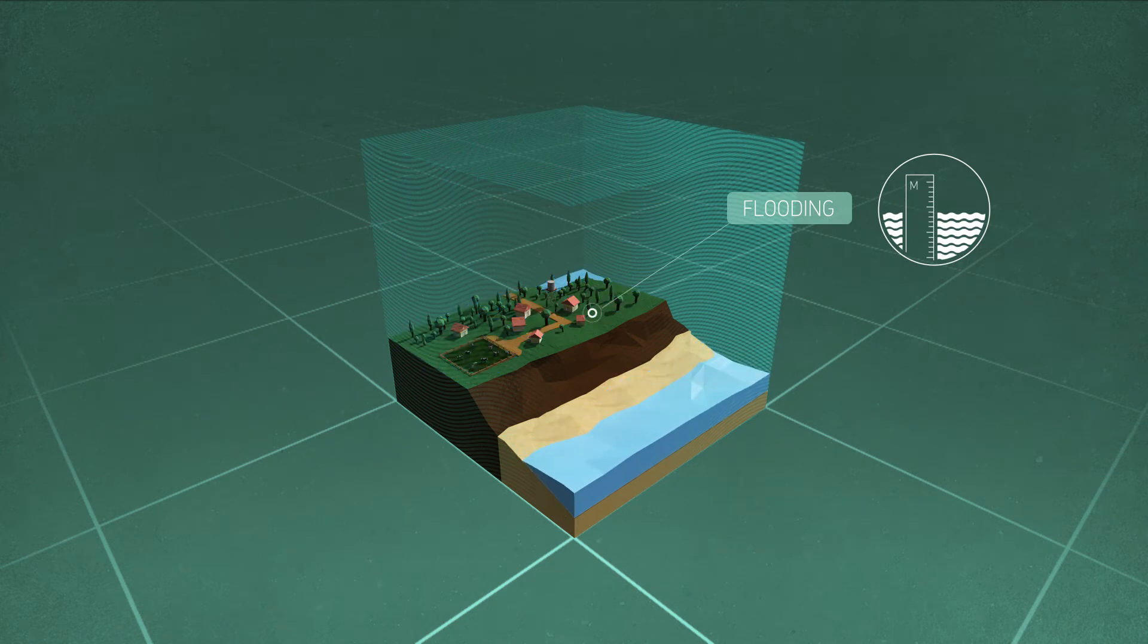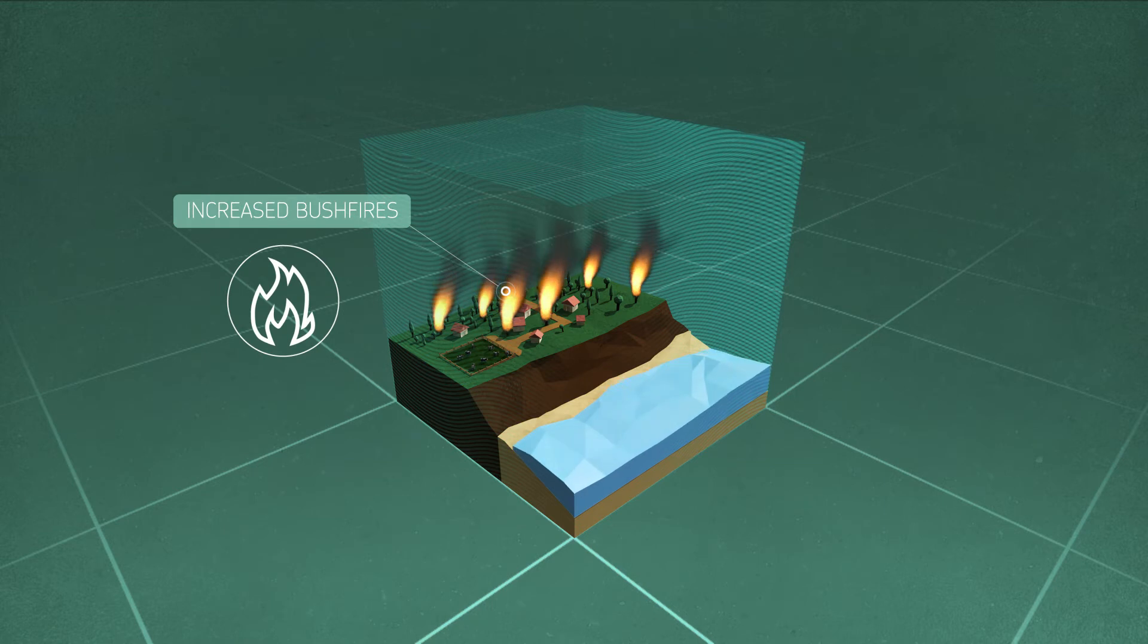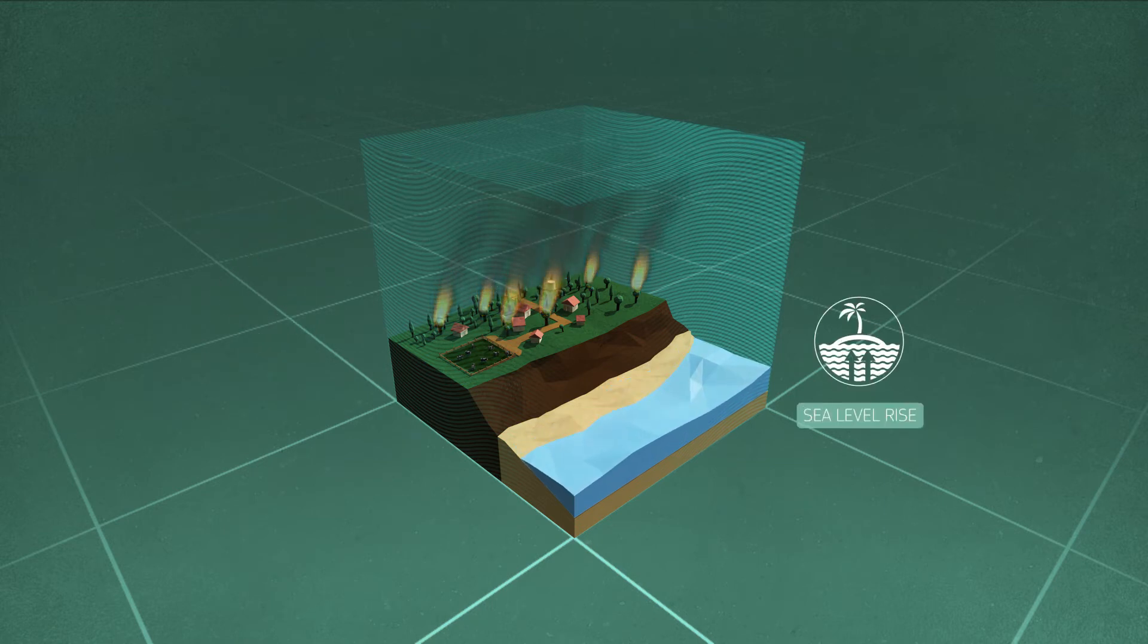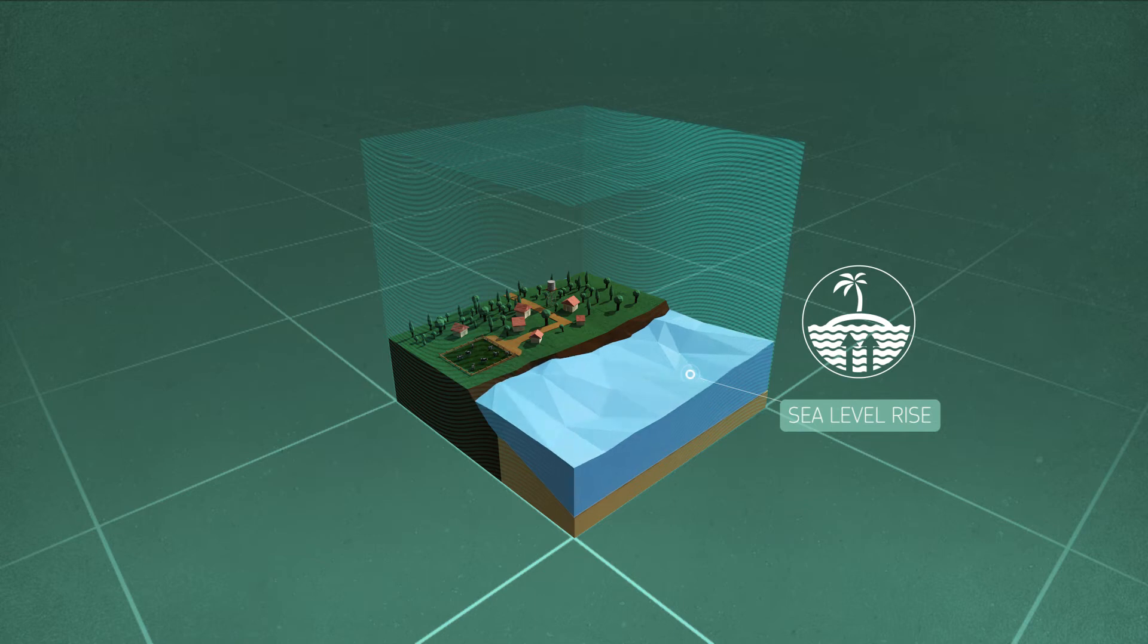Higher temperatures are likely to increase the number and intensity of bushfires. Globally there will also be a rise in sea level. This will cause greater coastal inundation and erosion.